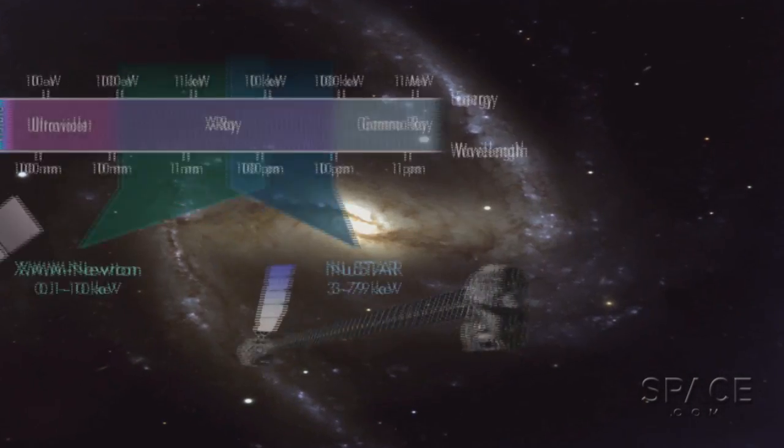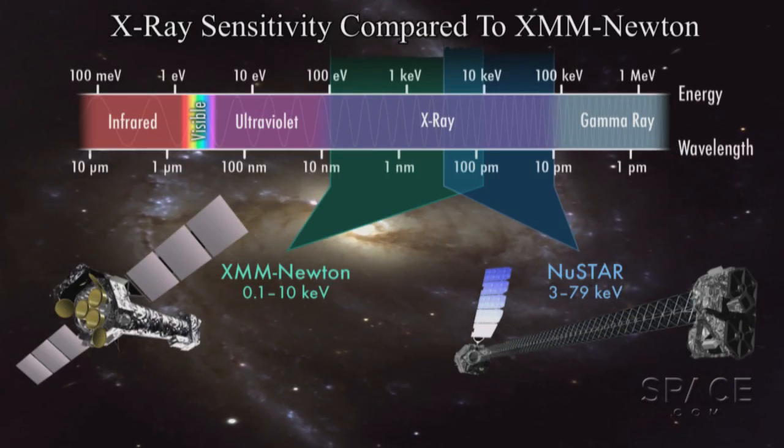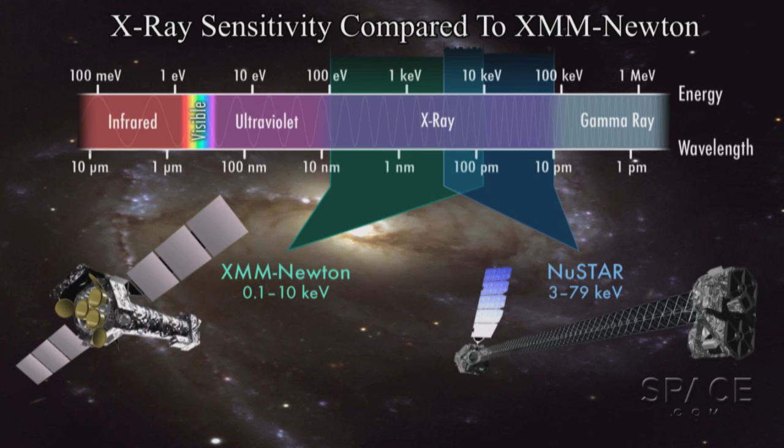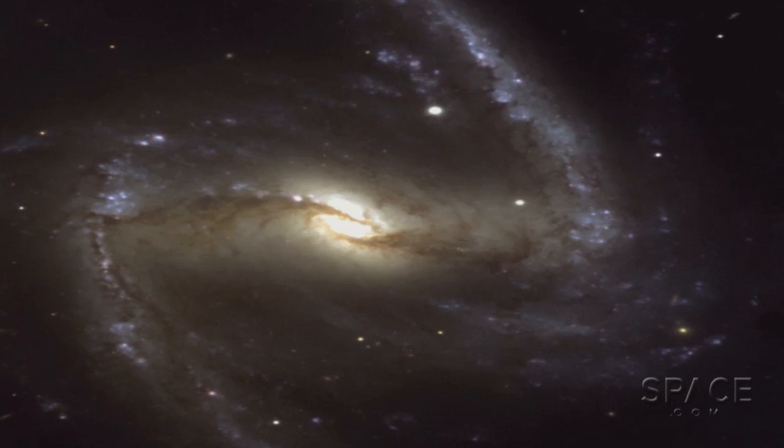With this instrument's higher sensitivity, the NuSTAR team has more or less proven that black holes can spin very rapidly. At least this one does.